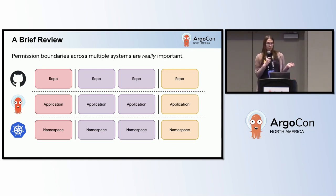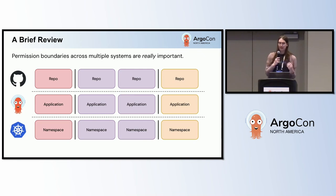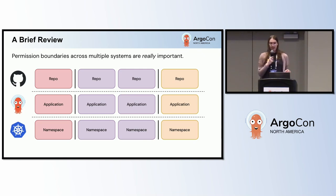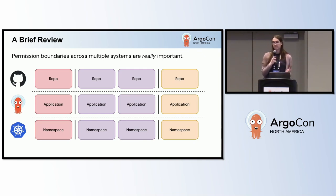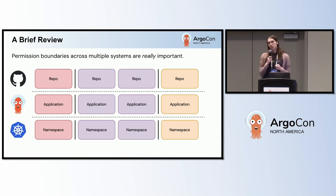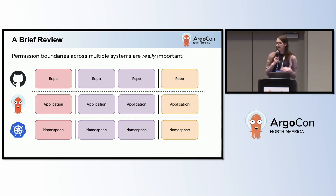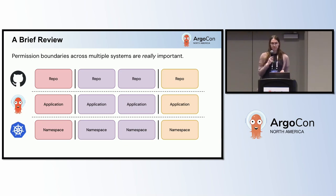Here I have GitHub, Argo CD, Kubernetes, and different teams or tenants color coded separately with permission boundaries between them. In GitHub, these permission boundaries would take the form of GitHub groups or repository contributors.